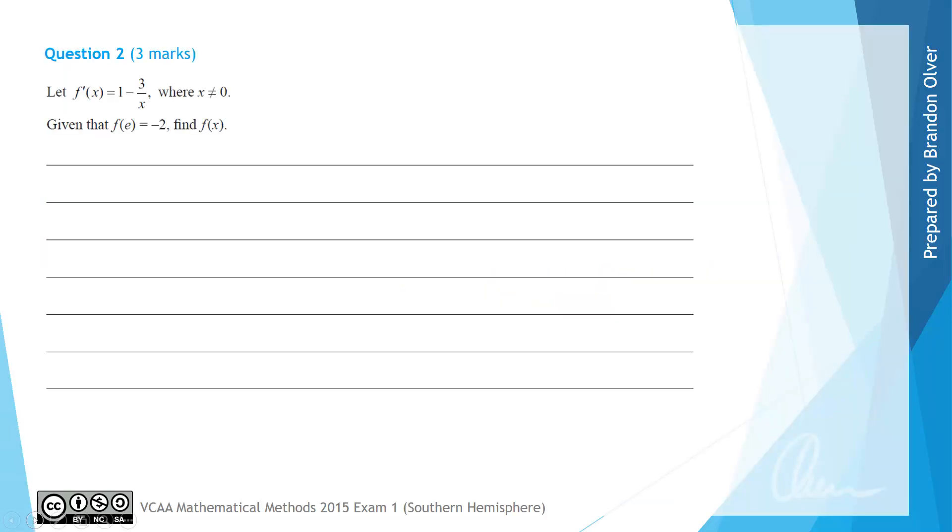For question 2 we have let f'(x), the derivative, equal 1 - 3/x, where x is not equal to 0. And for the new study design we'd probably be better off to say that x is greater than 0. The question goes on to say that given f(e) = -2, find f(x).